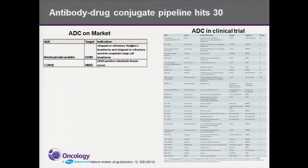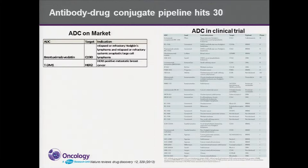Currently, there are two ADCs on the market targeting CD30 or HER2, covering both hematopoietic malignancy and solid tumors. In addition, as of 2013 there were more than 30 in various stages of clinical trials — by now likely more. So it's a very active field of research for cancer treatment.